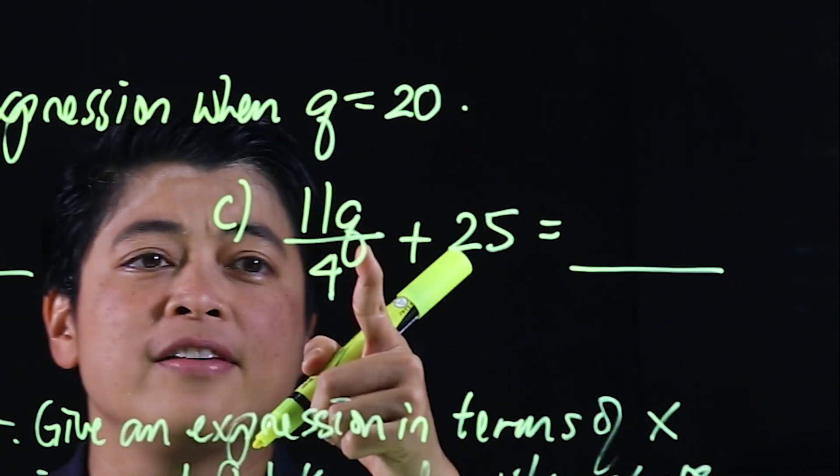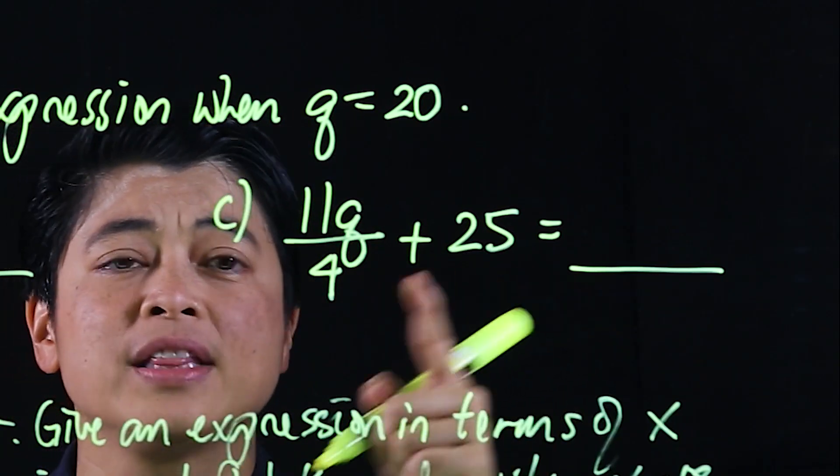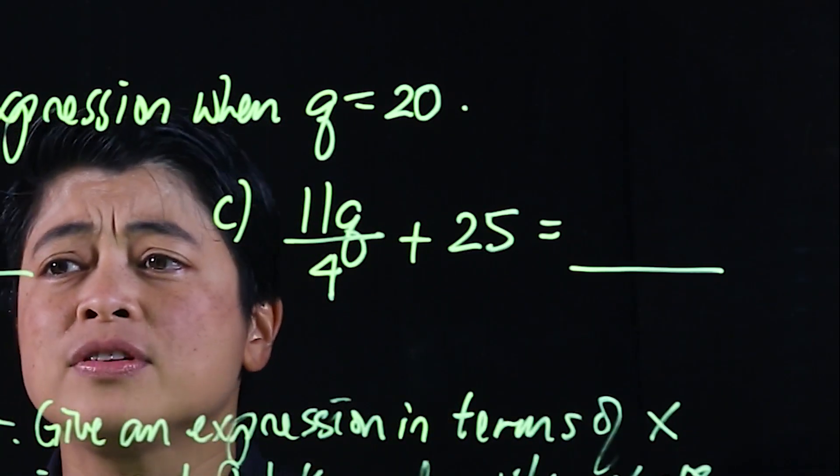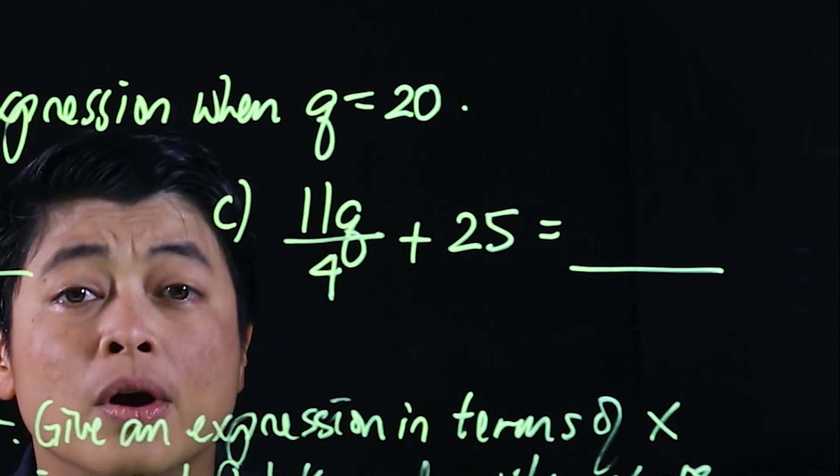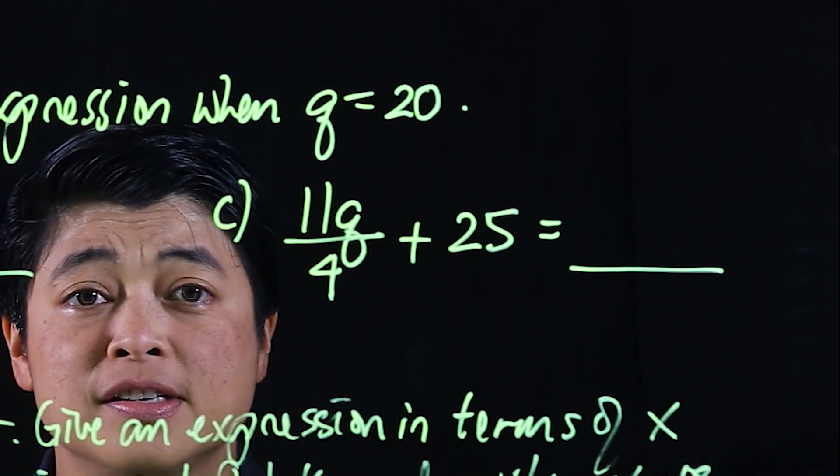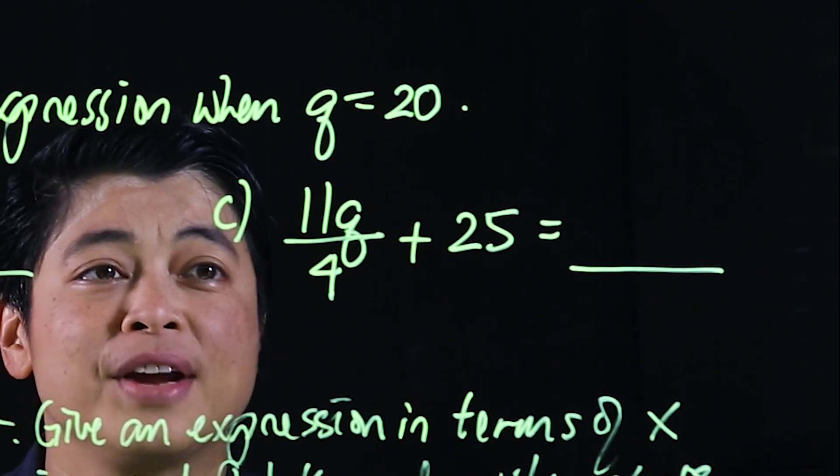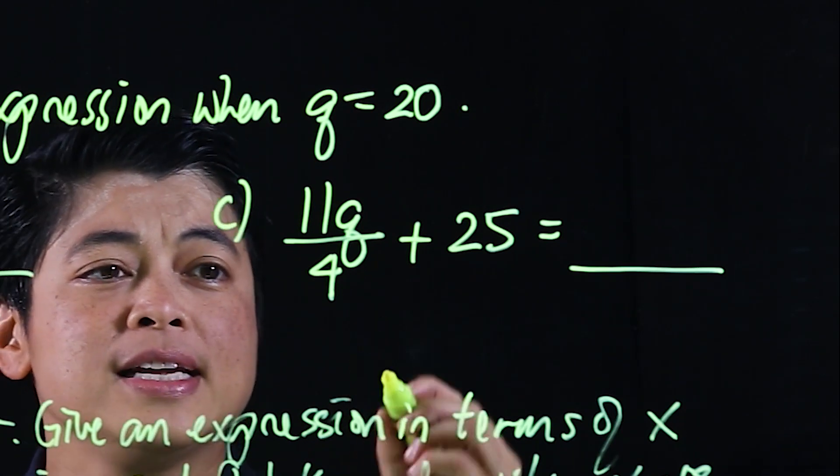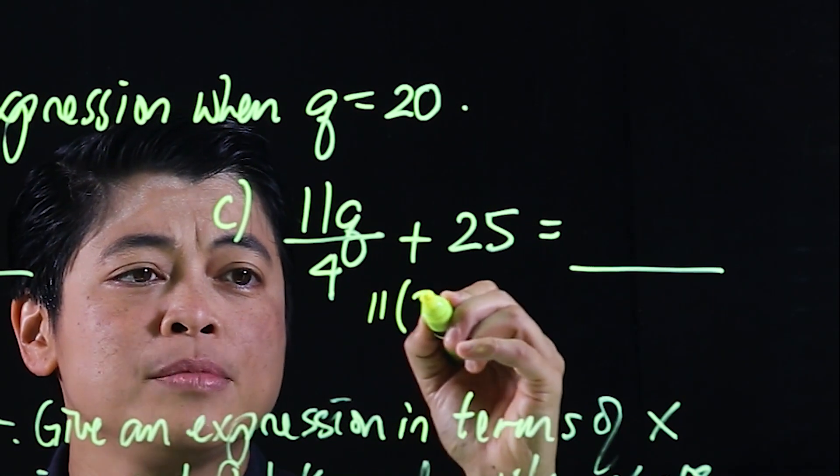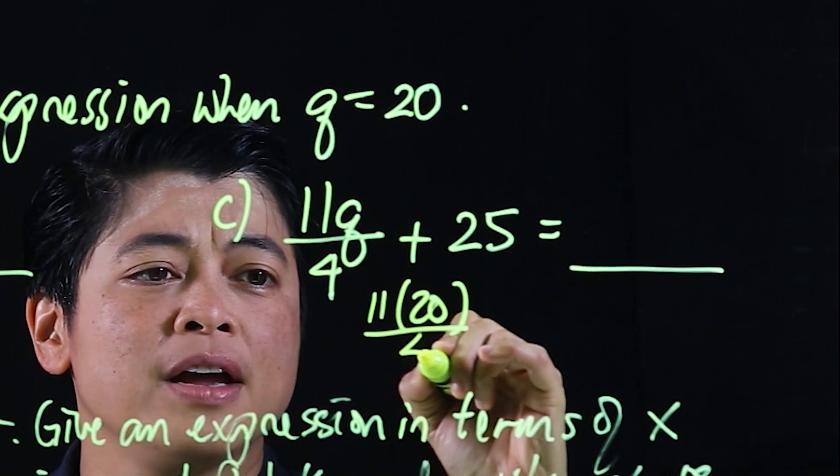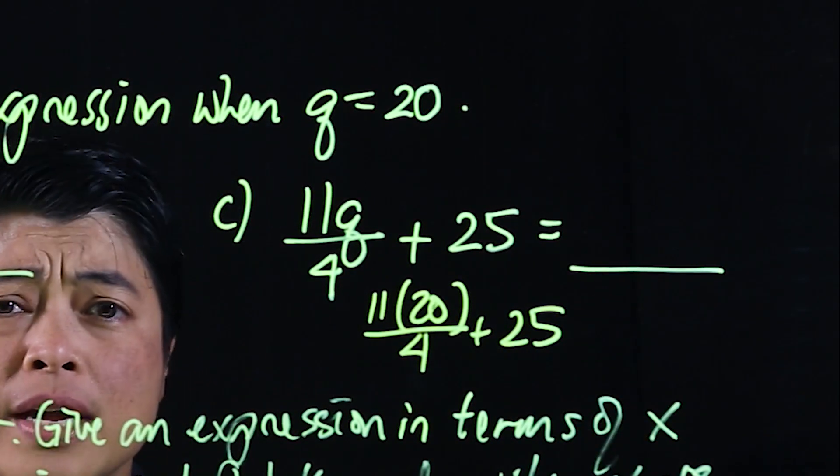Similarly, it says 11q over 4 plus 25. So we have to remember our order of operations. So that was taught in grade 5. So this is 11 times 20 divided by 4 plus 25.